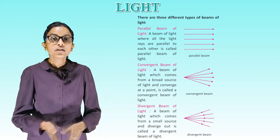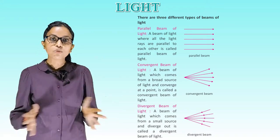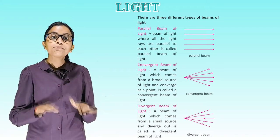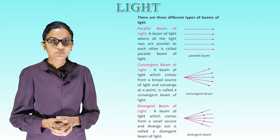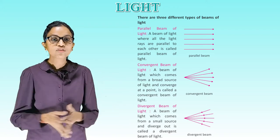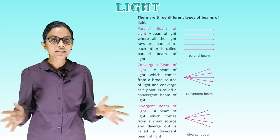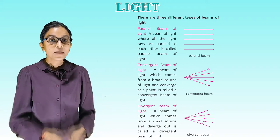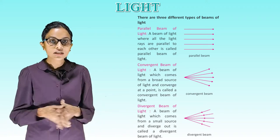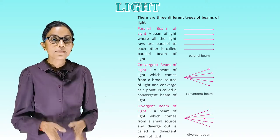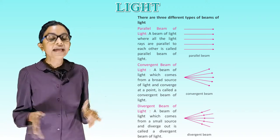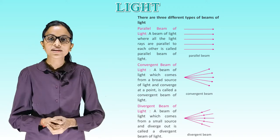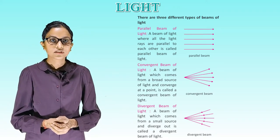There are three different types of beam of light. First, parallel beam of light: a beam of light where all the light rays are parallel to each other is called a parallel beam of light. See the diagram of a parallel beam.